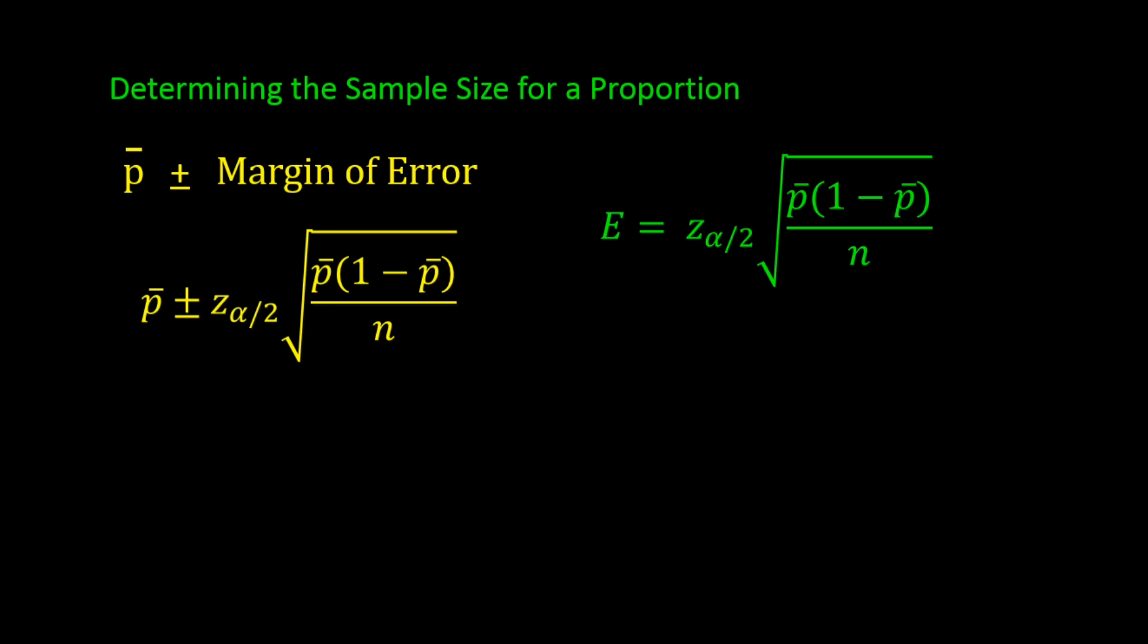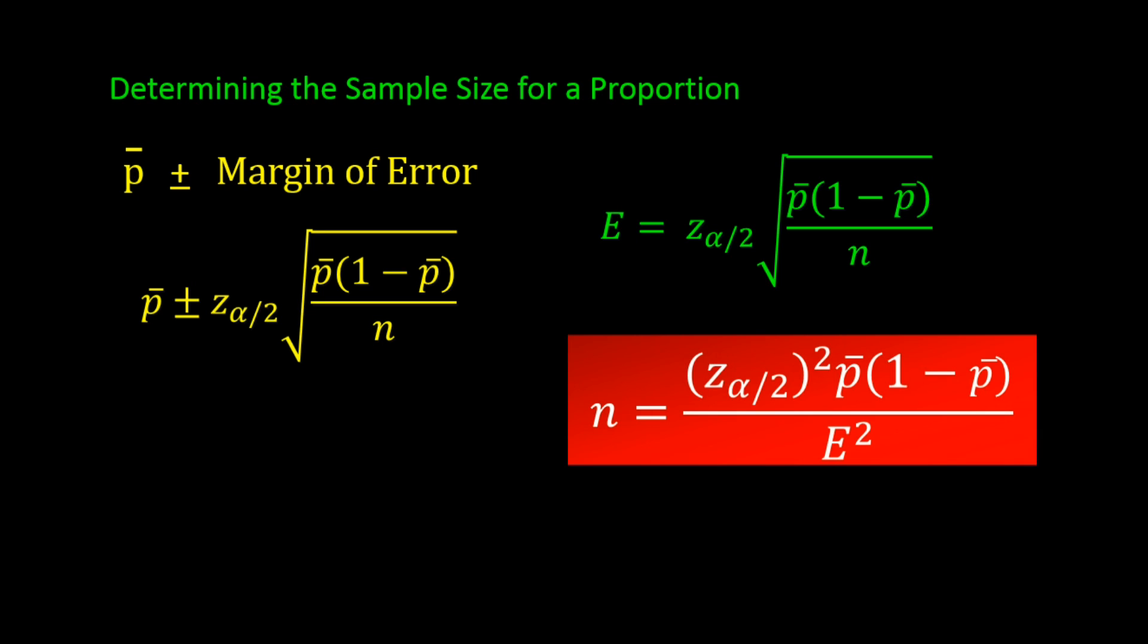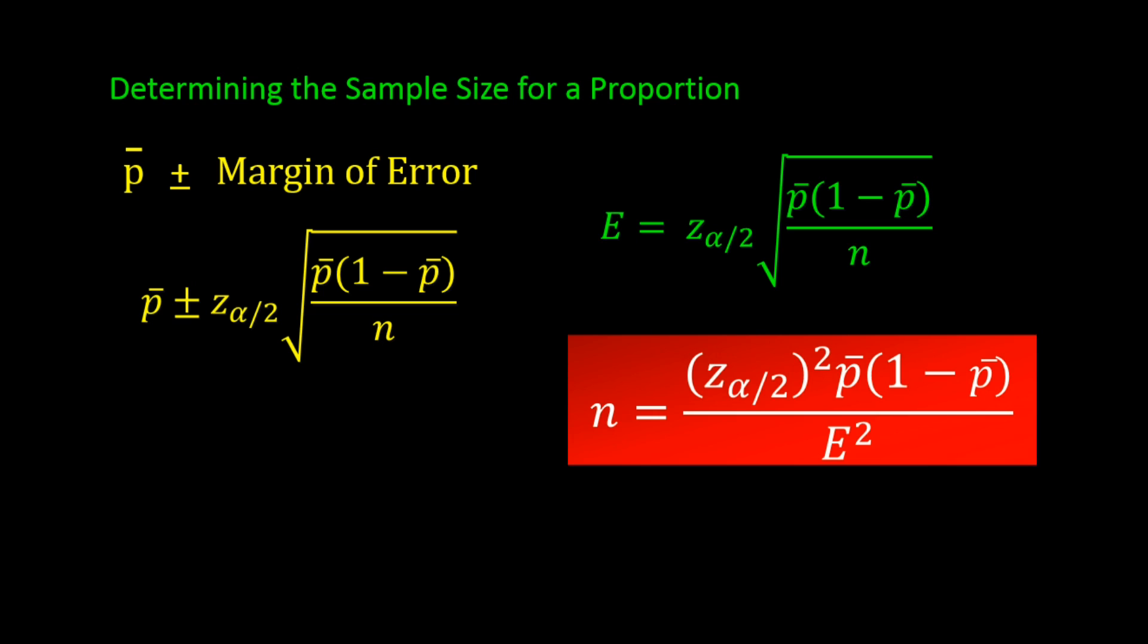Now solving this equation for little n as we did before, we get the following formula for determining the sample size. n is equal to z squared times p bar times 1 minus p bar divided by E squared. This is the formula we would use to determine the optimal sample size for a proportion.